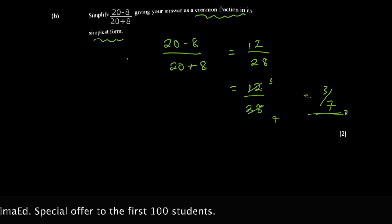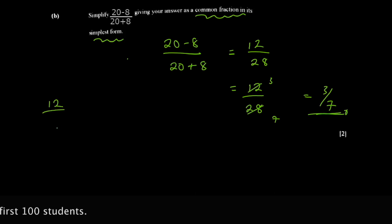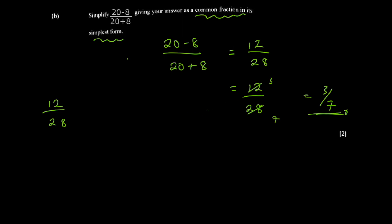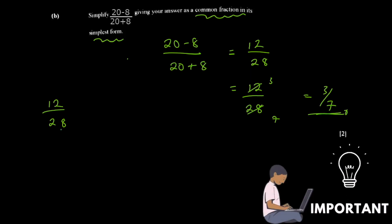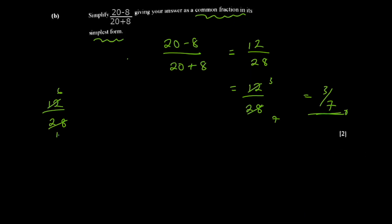Another way to approach it: sometimes it's not obvious what the highest common factor is between two numbers. You can use 2 as a factor — when the last digit is even, 2 is always a factor. Two into 12 gives 6, two into 28 gives 14. Then again: two into 6 gives 3, two into 14 gives 7. You still get three over seven.